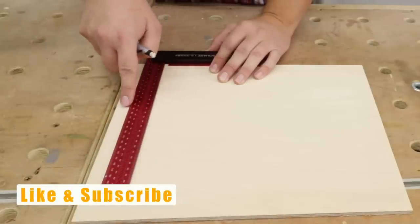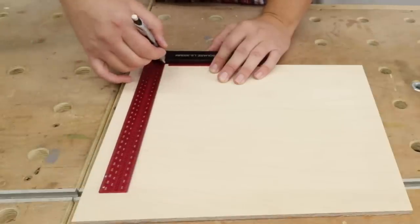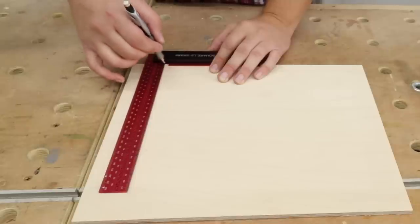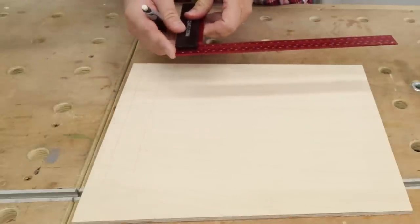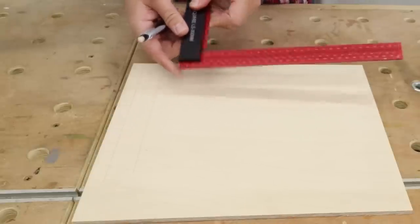You got markings on both of the sides and over here it actually starts from zero. Not all squares start from zero so that's very important, but of course it will also start from zero on this end as well.